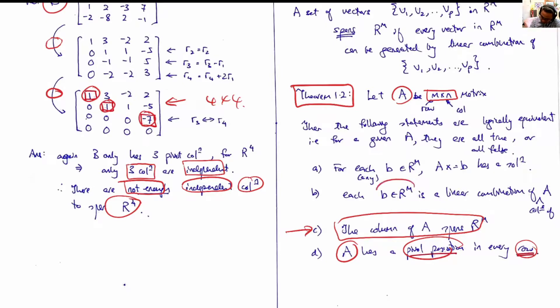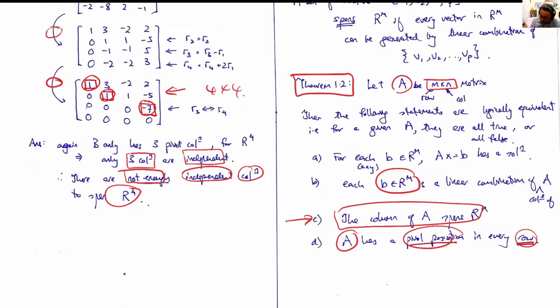The other statement about this is: if B is in R^m—in our case, R^4—that means B is a linear combination of A, and any B in this example is then true.